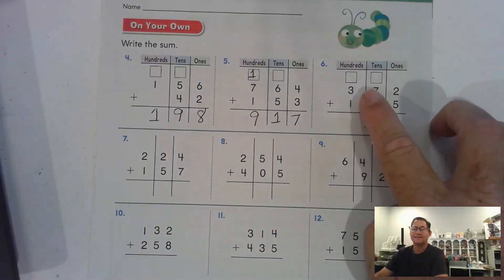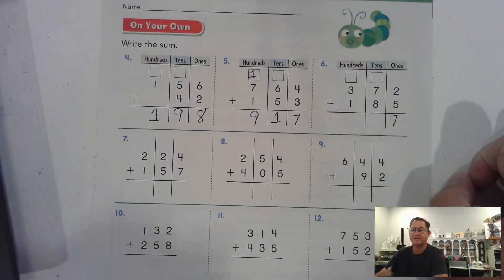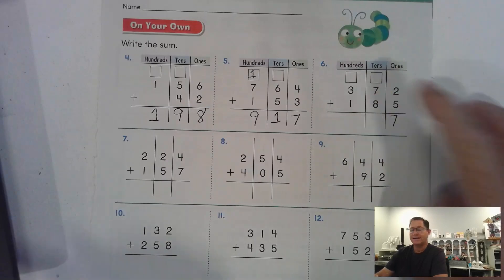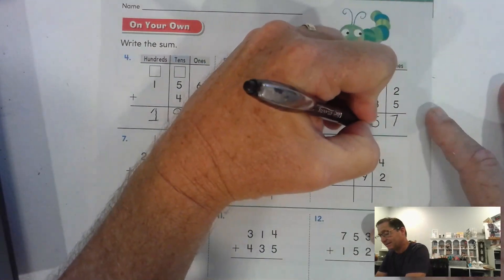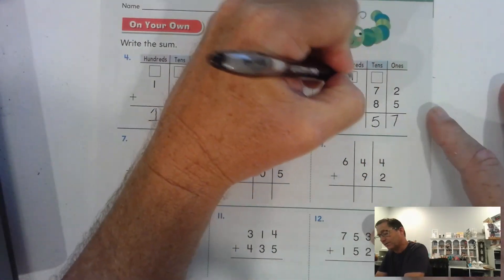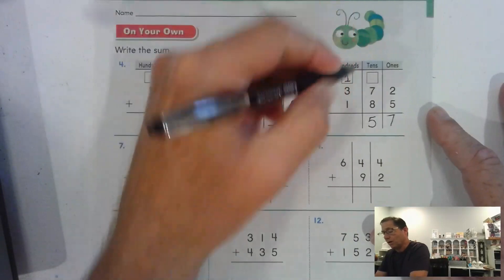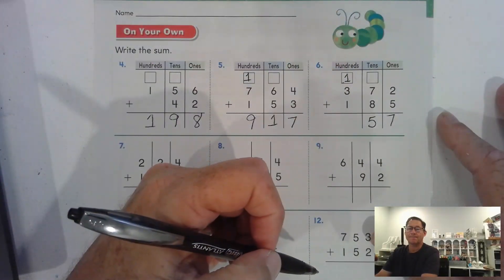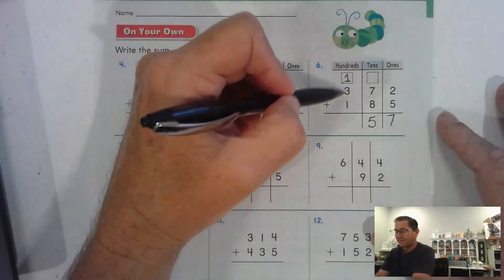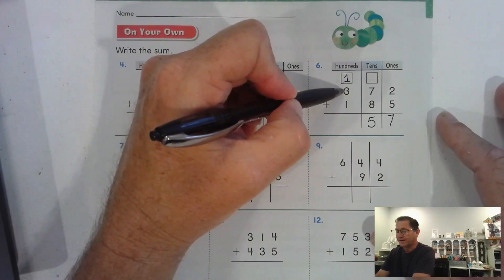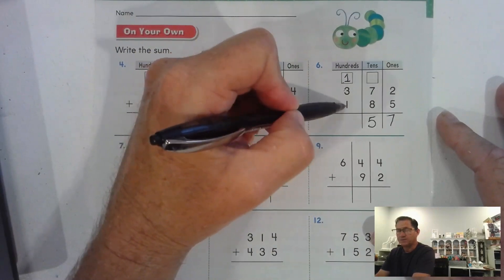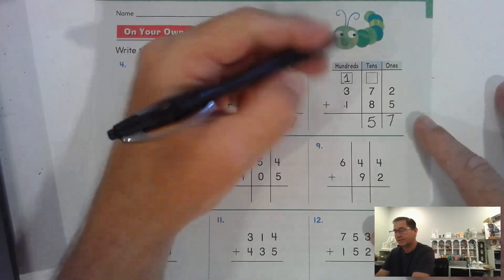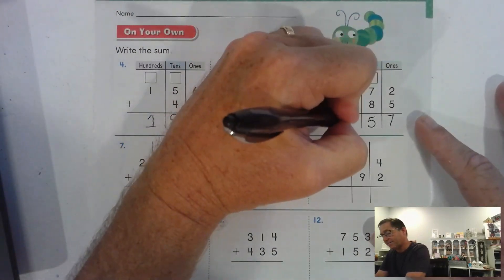Seven and two more hundreds is nine hundred. We did regroup the tens because there were eleven tens. Number six: five and two is seven ones. Eight and seven — that's a math fact you should know — eight and seven is fifteen. We regroup that as one hundred and five tens.